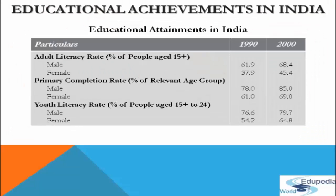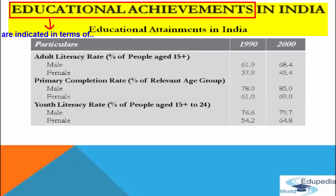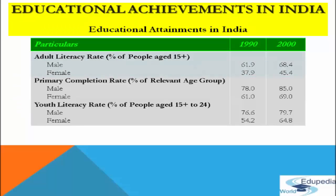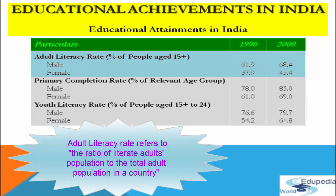Now we come to educational achievements in India. Educational achievements are generally indicated in terms of adult literacy level, primary education completion rate, and youth literacy rate. Adult literacy rate refers to the ratio of literate adult population to total adult population. In case of males, the adult literacy rate increased from 61.9% in 1990 to 68.4% in 2000.